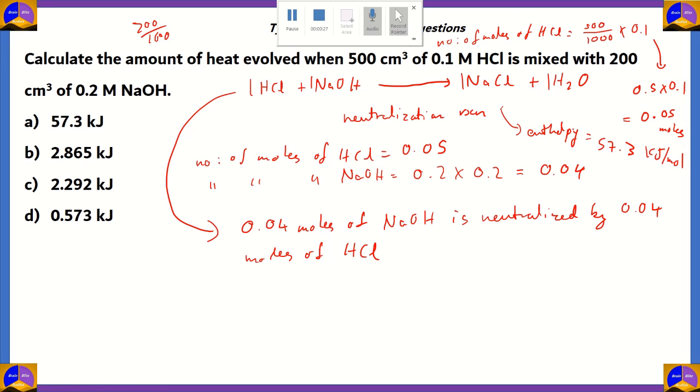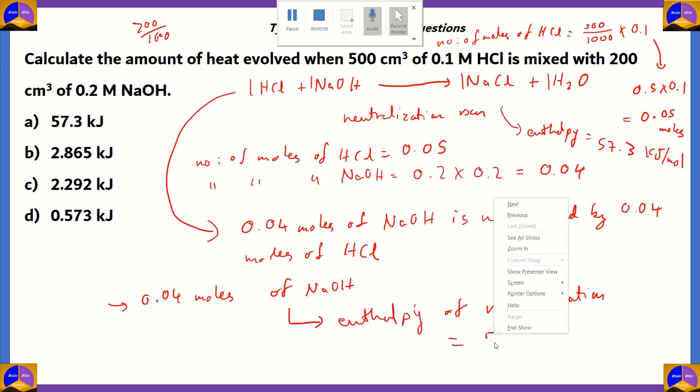So, this is when we have 1 mole of NaOH. So, right now, we have 0.04 moles of NaOH. So, therefore, the enthalpy of neutralization for this particular reaction, which basically calculates the amount of heat evolved, will be equal to 57.3 times 0.04 moles of NaOH.